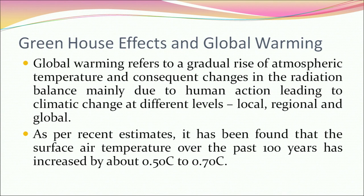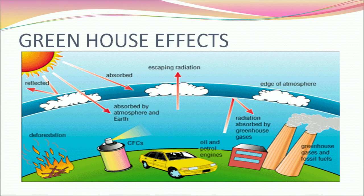Now let's talk about greenhouse effects and global warming. Global warming refers to a gradual rise of atmospheric temperature and consequent changes in the radiation balance, mainly due to human action, leading to climatic change at different levels — local, regional, and global. As per recent estimates, the surface air temperature over the past hundred years has increased by about 0.5°C to 0.7°C.